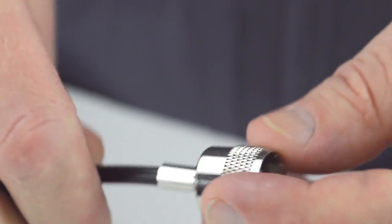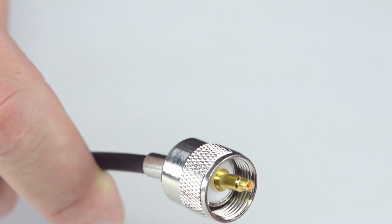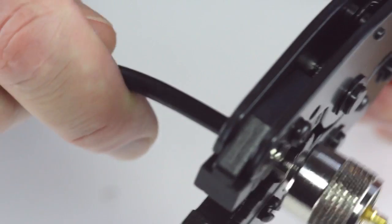Slide up the ferrule to the base of the connector, folding the shield with it. Crimp the ferrule onto the outer jacket to complete termination.